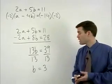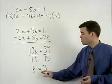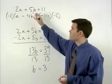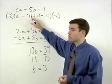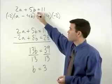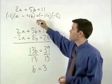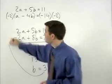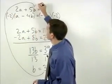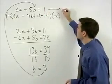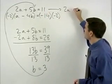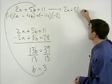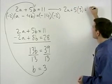To solve for a, plug a 3 in for b in either one of our two original equations. So let's go with our first equation, 2a plus 5b equals 11. If we plug a 3 back in for b, that gives us 2a plus 5 times 3 equals 11.